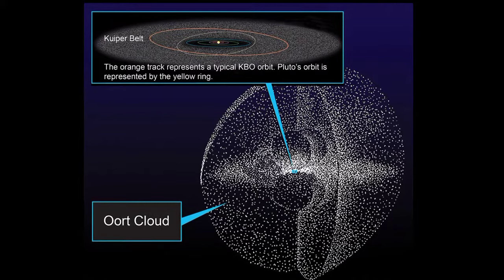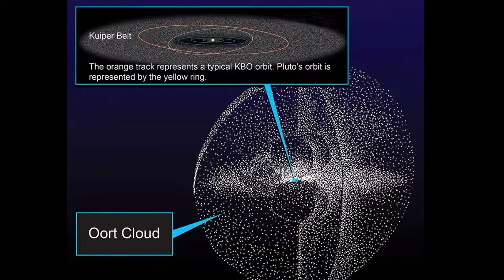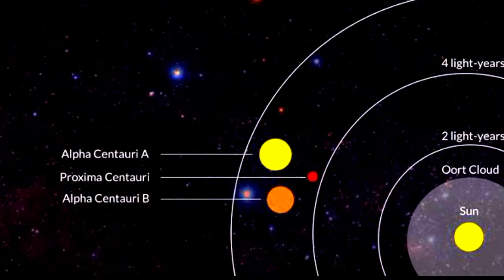The inner limits of the Oort cloud begin at about 2,000 astronomical units from the sun. The outer edge is believed to be about 10,000 to 100,000 AU from the sun. The cloud stretches out almost a quarter of the way to the nearest star, Proxima Centauri.